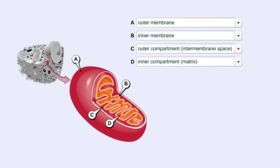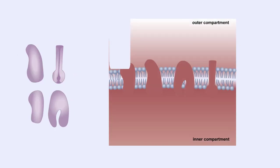Inner Compartment (Matrix): The reactions of the Krebs cycle occur here. A series of electron carrier proteins are embedded in the inner mitochondrial membrane.